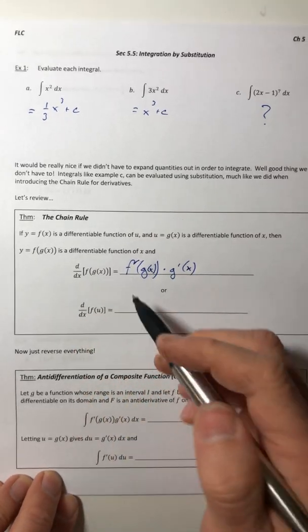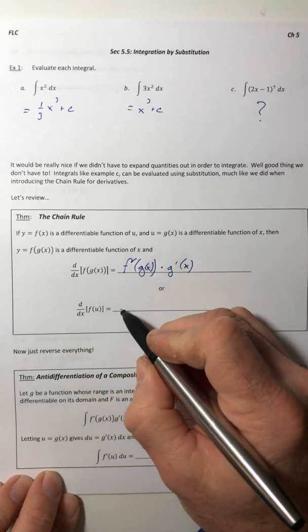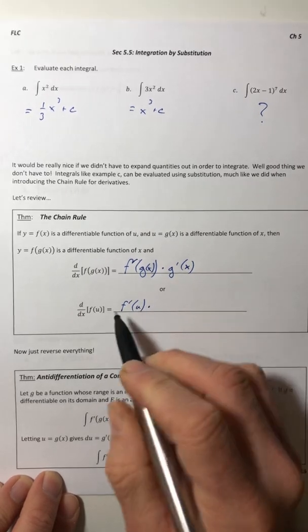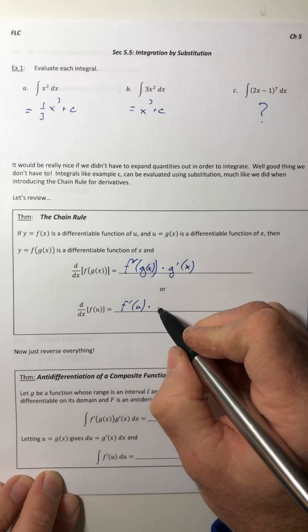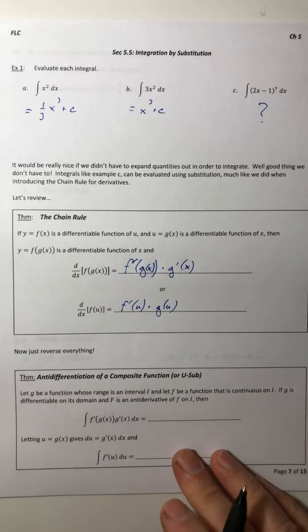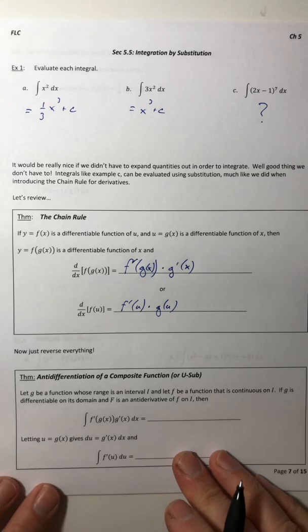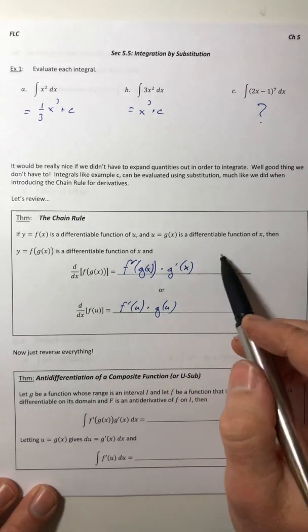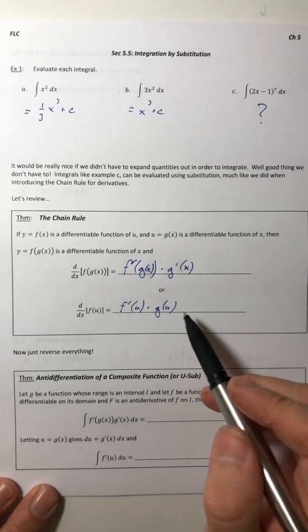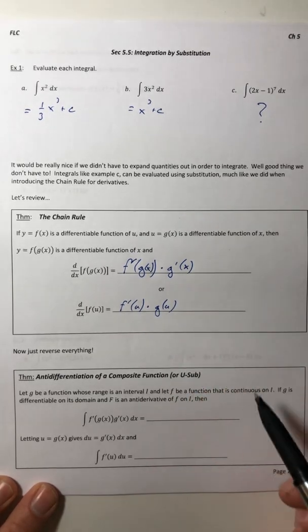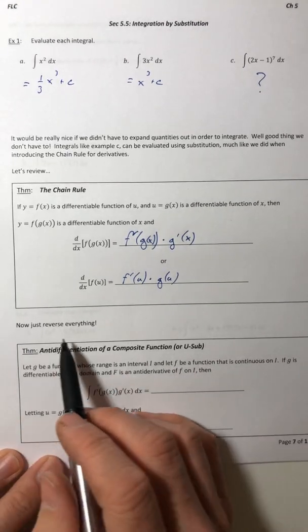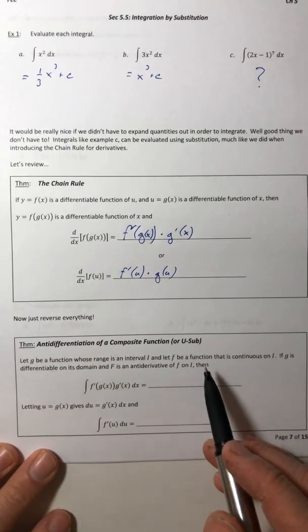And the derivative of f of g of x, that composite function, is f prime of g of x times g prime of x. Or if you did that substitution and got it in terms of u, it is f prime of u times du dx. So we would take a function, let u equal something, and then we would switch everything around so the function's variable became u instead of x, and then we did the derivative.